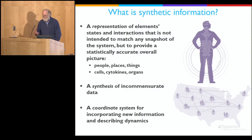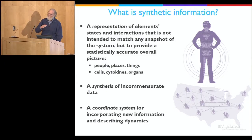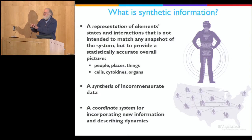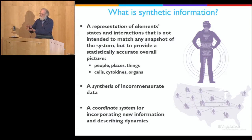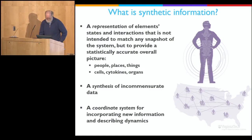Another way to think of this, as Chris likes to describe it, is that this is a coordinate system for adding more data. So if you have a synthetic population and you find out something about risk factors that you think might be useful in personalized medicine, you can add the information about those risk factors onto the synthetic population that you already have. It's like a coordinate system for adding information.